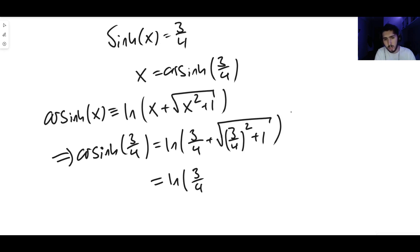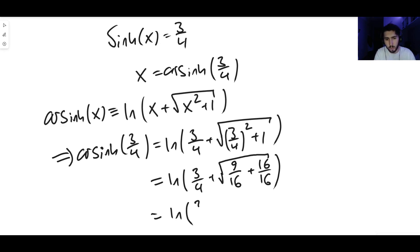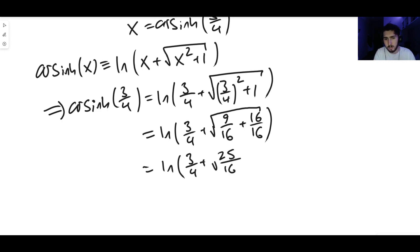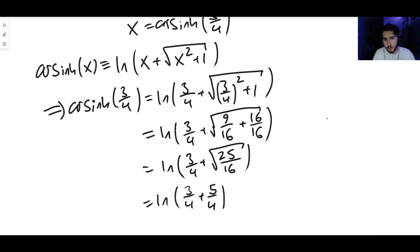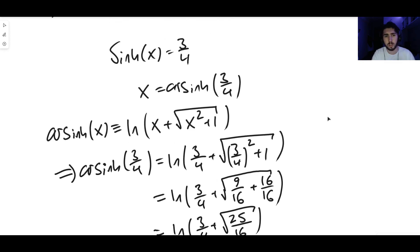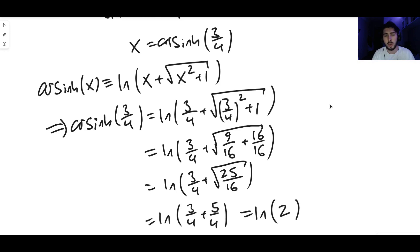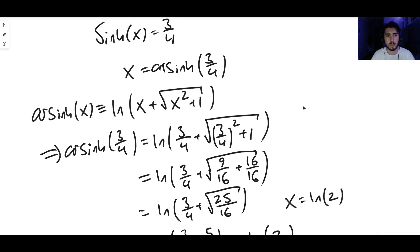Three over four squared is nine over sixteen, and writing one as sixteen over sixteen so they have the same denominator, this becomes the natural log of three over four plus the square root of nine over sixteen plus sixteen over sixteen, which is twenty-five over sixteen. The square root of twenty-five over sixteen is five over four. So this is the natural log of three over four plus five over four, which is the natural log of eight over four, which is the natural log of two. So the answer is x equals the natural log of 2.